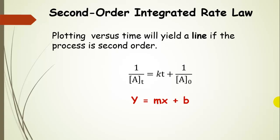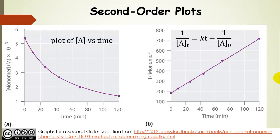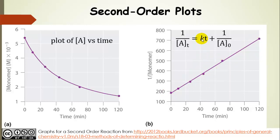If a process is second order, when we plot the reciprocal of the concentration of A at various times versus time, that will yield a straight line. Here are a couple of second order plots. If we just plot the concentration of A versus time without taking the reciprocal, we get a curve — not terribly useful, looking somewhat like an exponential curve although it's not. If we take the inverse of each concentration and plot it versus time, a second order process will yield a straight line, and the slope of this line is the rate constant k.